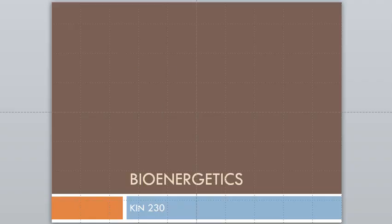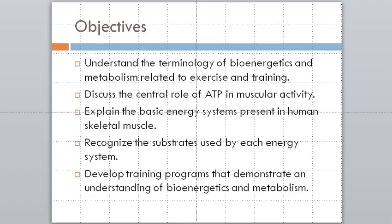This is looking at how the body takes substrate — carbohydrate, fat, protein, what we usually refer to as food — and turns that into the energy currency the body recognizes. And it's not calories. Calories is a measure of heat. The body is looking for a particular chemical formula so it can do muscular contraction.